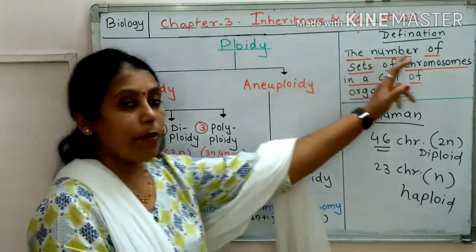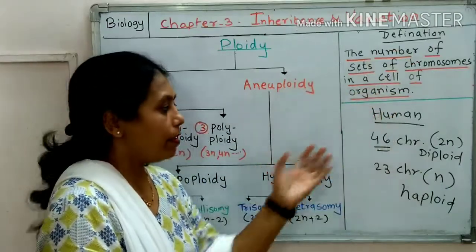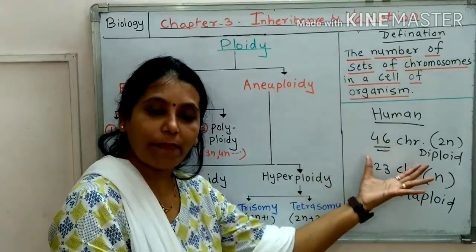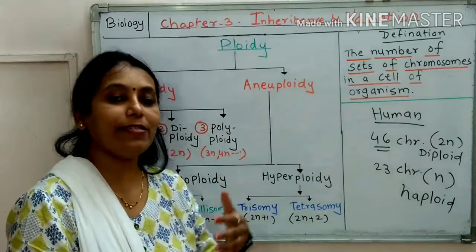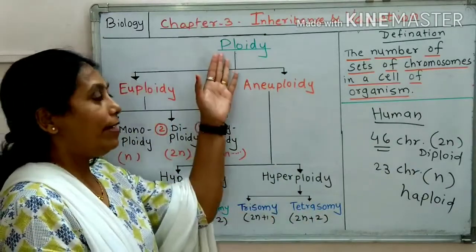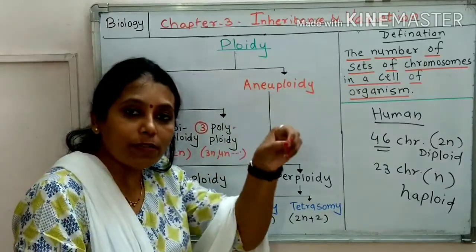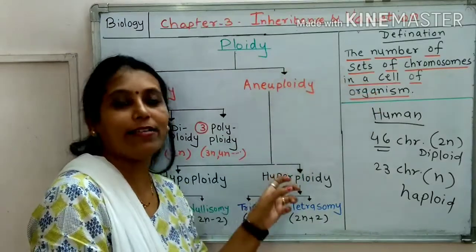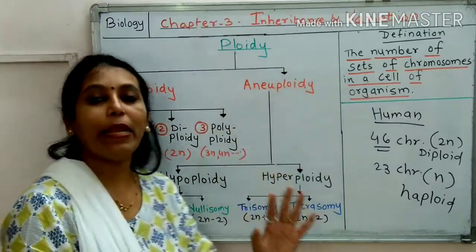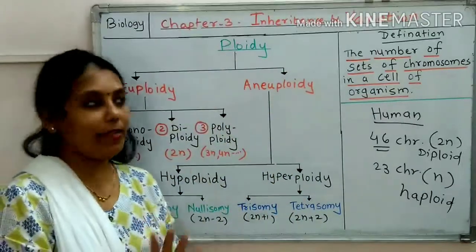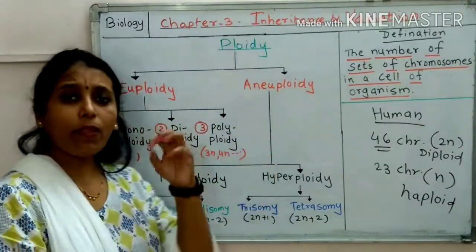Now, the number of sets of chromosomes present in the cell of an organism — this is the normal condition, with 46 chromosomes in the cell. If this set of chromosomes is increasing, then it falls under euploidy. If chromosomes are individually increasing or decreasing, that is aneuploidy. So broadly, ploidy is divided into two categories: number one, euploidy, and number two, aneuploidy.